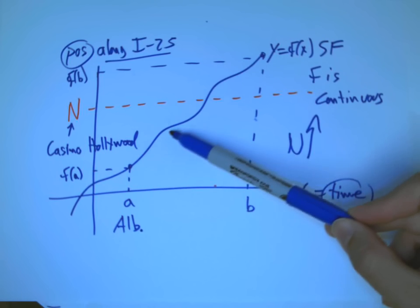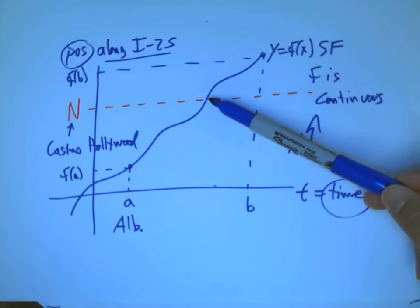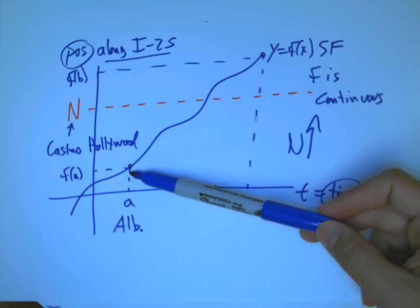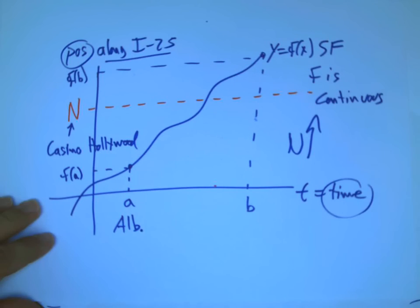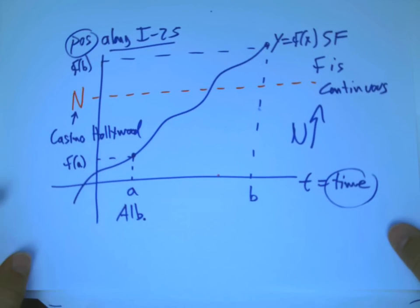I don't go around the back way or something behind the mountains, I start out in Albuquerque, and I'm on I-25, and I go north to Santa Fe, at some point I must have passed by Casino Hollywood, because that's a place on the way.